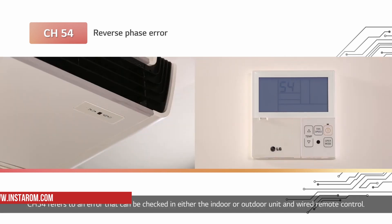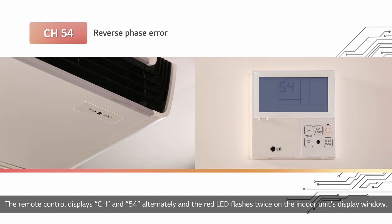Channel 54 refers to an error that can be checked in either the indoor or outdoor unit and wired remote control. The remote control displays CH and 54 alternately, and the red LED flashes twice on the indoor unit's display window.